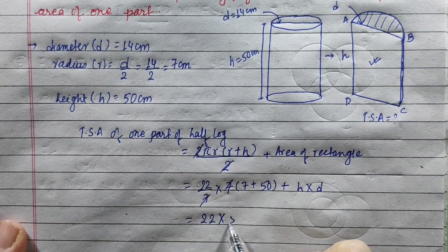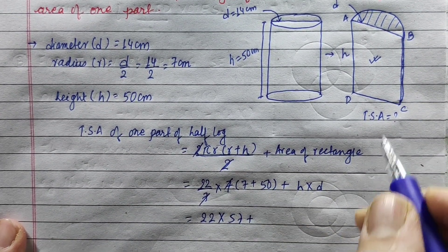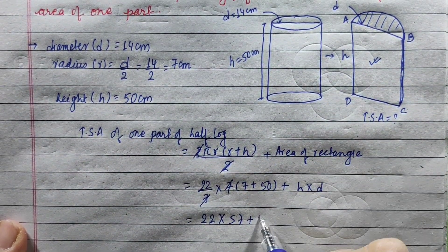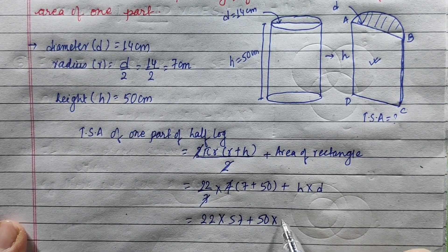So (22/7) × 7 × 57 plus 50 × 14. The diameter is 14.